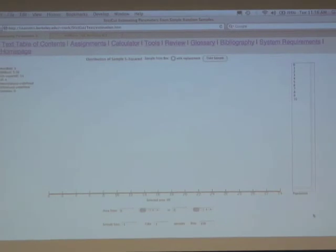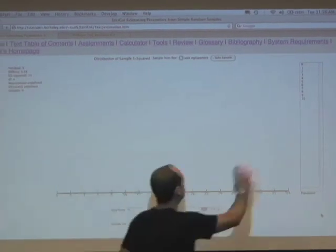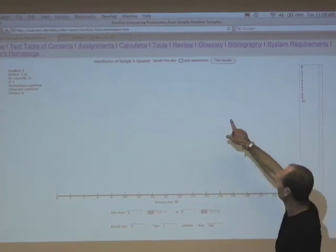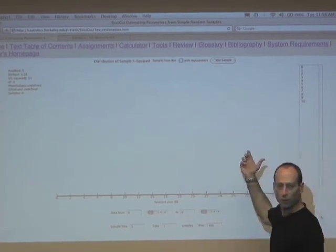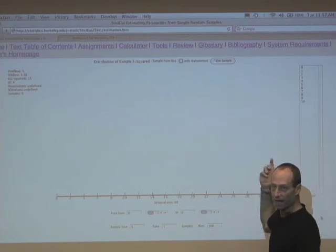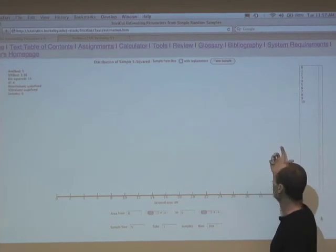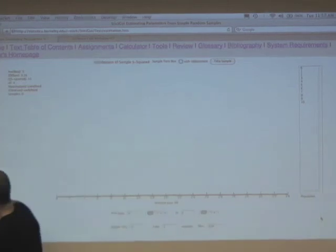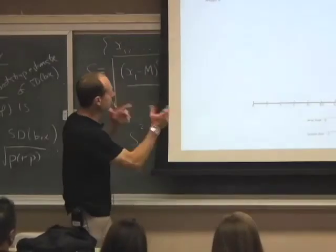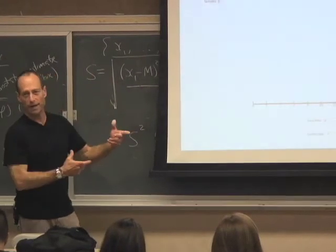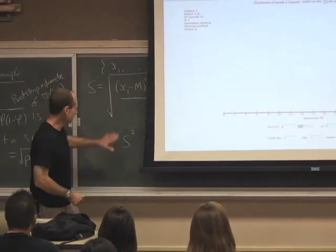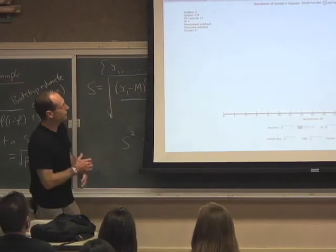So this is our sampling applet as before. We've got the numbers 0 through 10 in the box. But now what we're calculating instead of the sample mean or the sample sum is we're calculating S squared. When we draw a sample, each time we draw the sample, we're going to calculate this thing I've just covered up. That is, the sum of the squares of the residuals from the mean divided by n minus 1 and not taking the square root. We're looking at S squared because it's S squared that's supposed to be unbiased for the standard deviation of the box.